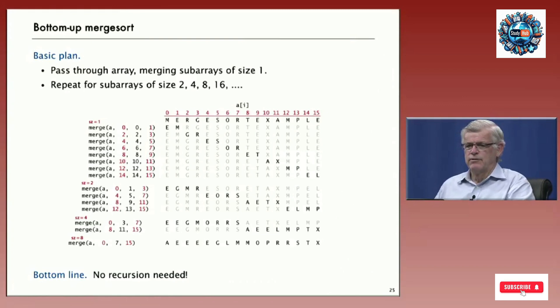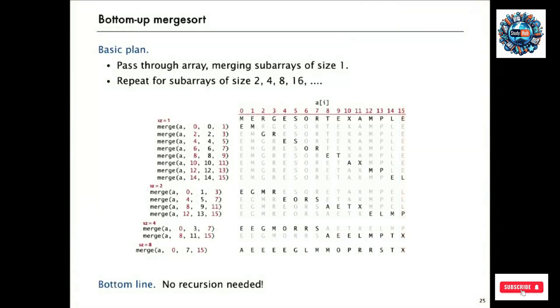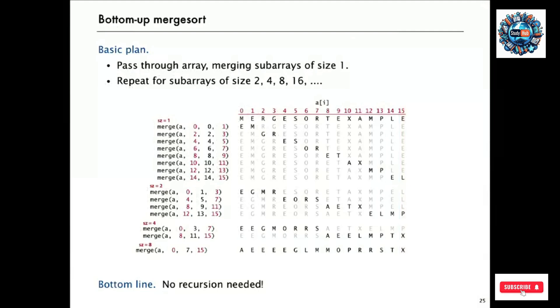The basic idea is to think of the array at the beginning as a set of little sorted subarrays of size 1. And then what this method will do is go through and merge those little subarrays of size 1 together in pairs to get subarrays of size 2. Then the whole array consists of sorted subarrays of size 2. Then we make another pass through to get size 4 and then size 8 and so forth.